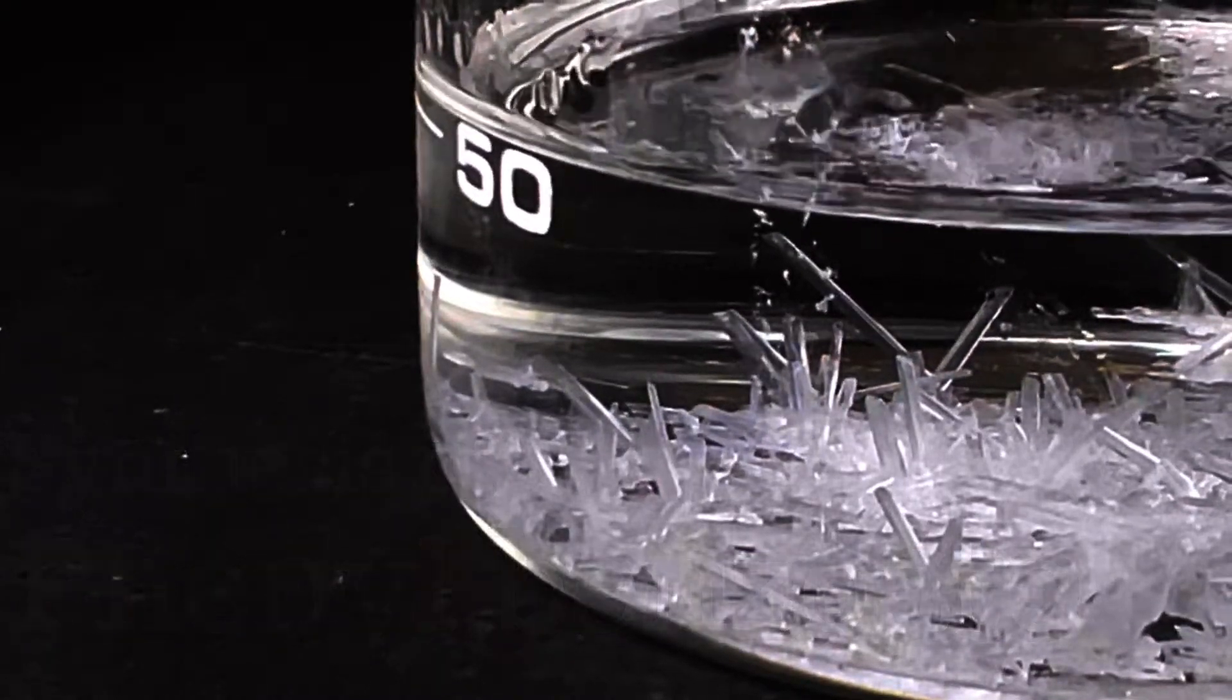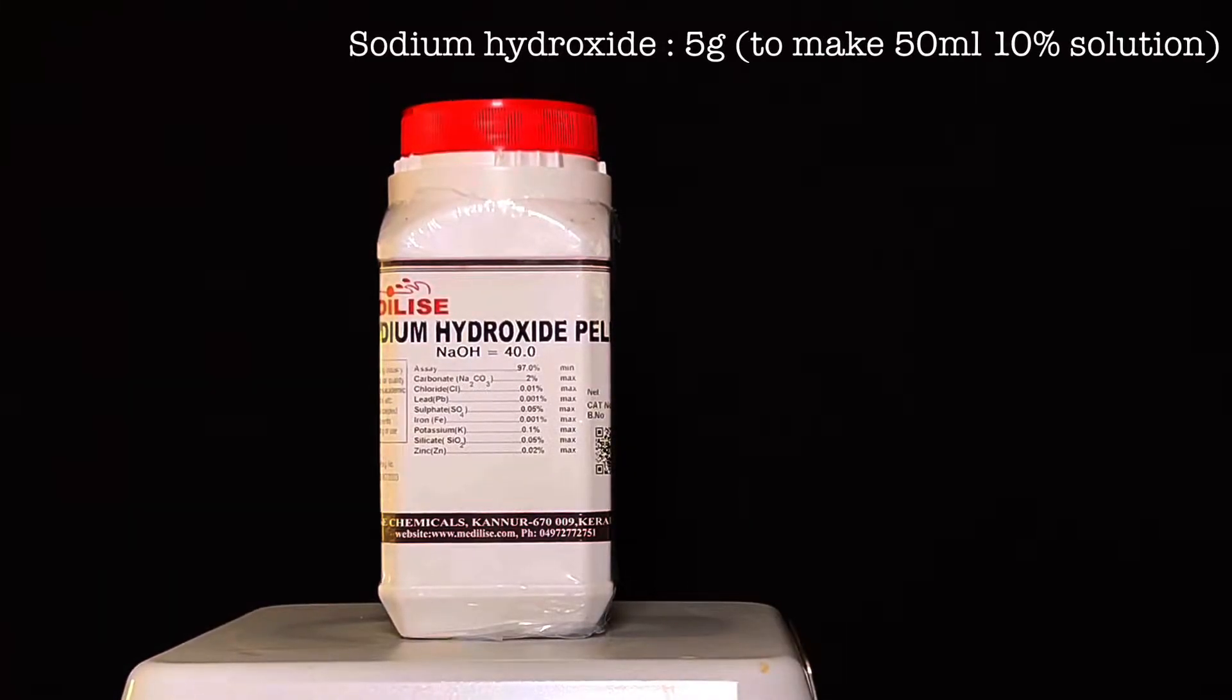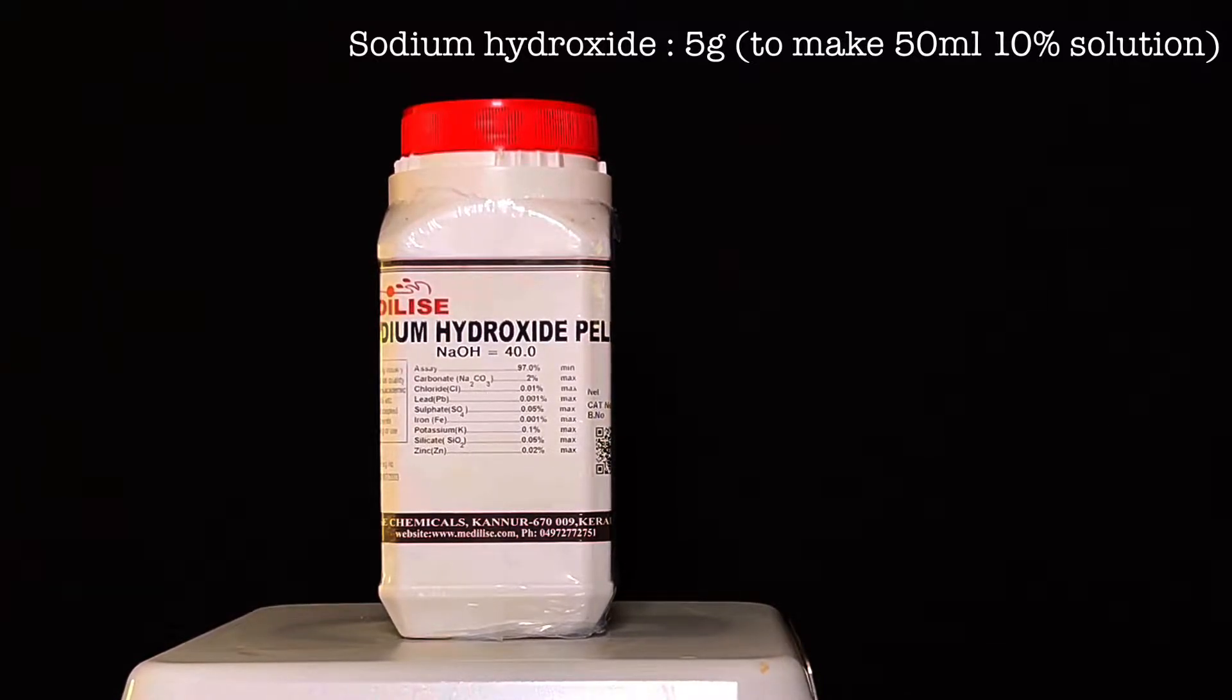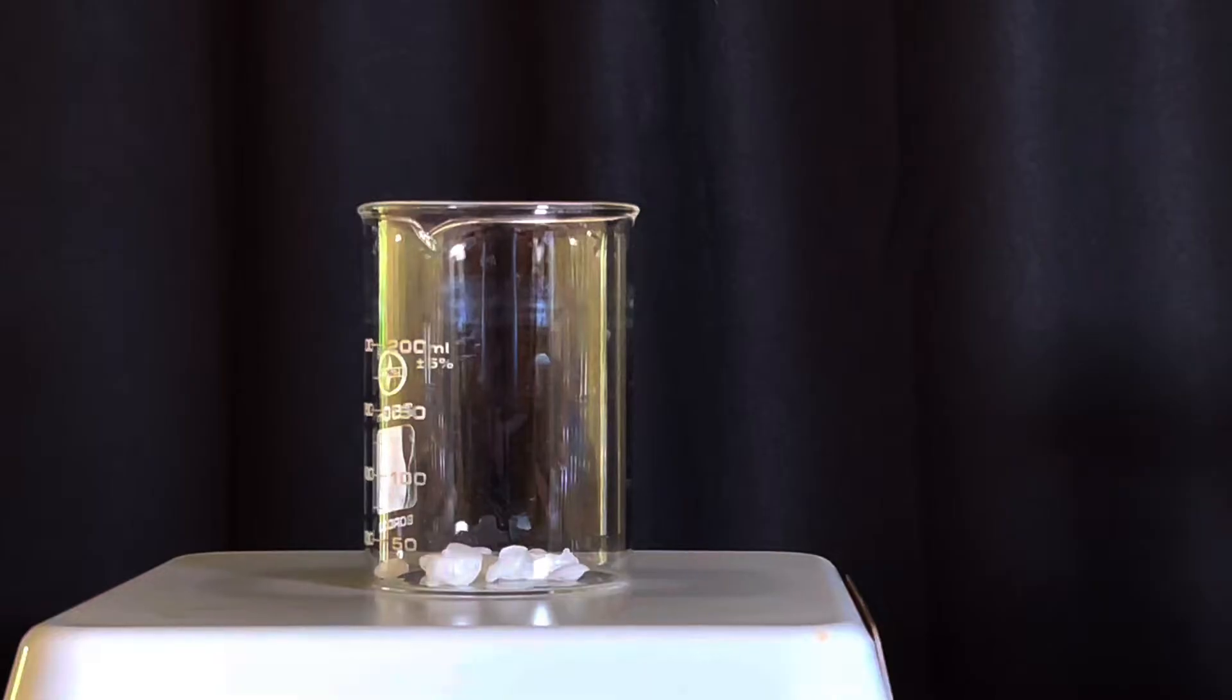For this experiment you will need 2.5 grams of phenol crystals, 5 grams of sodium hydroxide pellets to make 50 ml of a 10% solution, and 5 ml of benzoyl chloride.